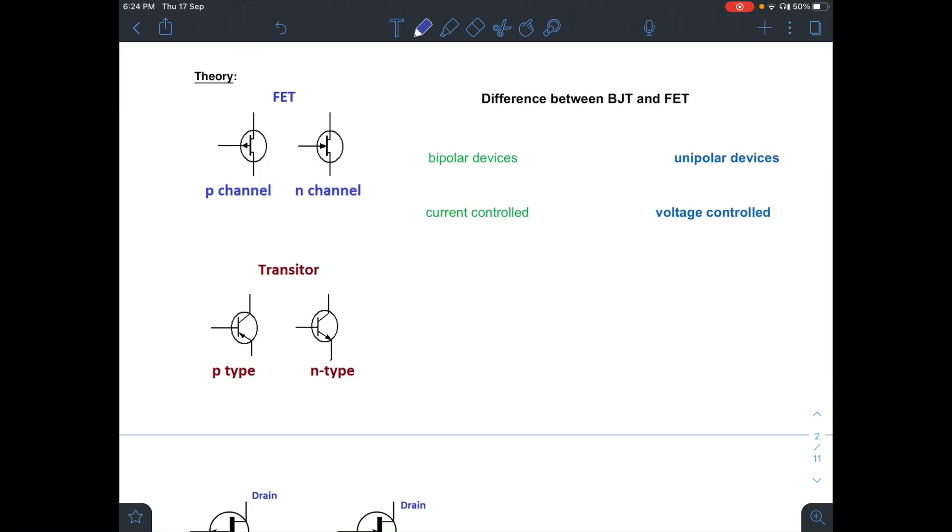Before going into the experimental details, let us discuss some theory regarding field effect transistor. As you can see from the figure, the field effect transistor is a three terminal device like a transistor. FET is also a three terminal device and there are two types: p-channel and n-channel.